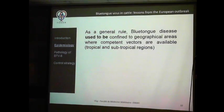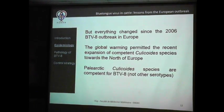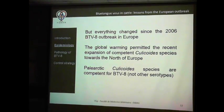As a general rule, Blue Tongue disease used to be confined to geographical areas where competent vectors were present — tropical and subtropical regions, broadly Africa and the extreme south of Europe. But everything changed since BTV-8 appeared in Europe. There are two reasons: first, global warming permitted the recent expansion of some Culicoides species northward — first confined to southern Spain and Italy, they were able to spread north bringing viruses including BTV-8.